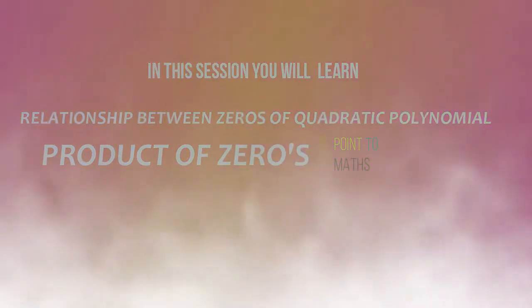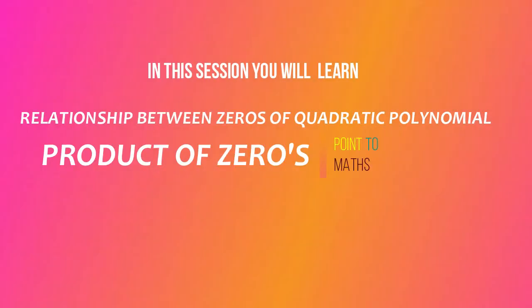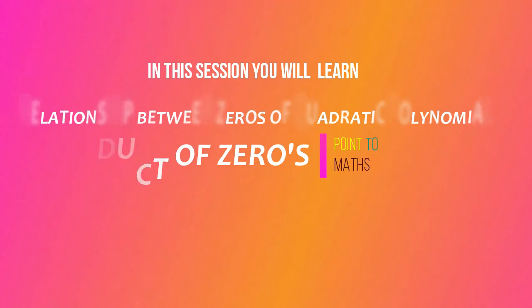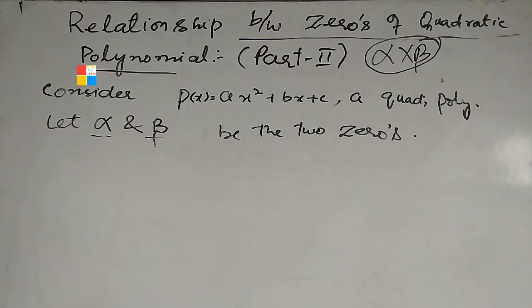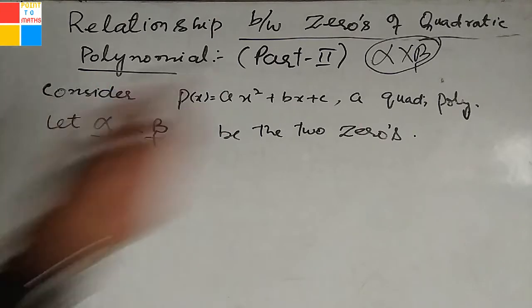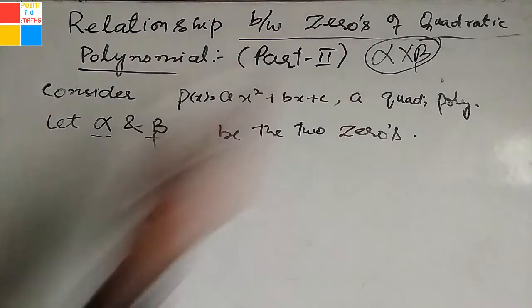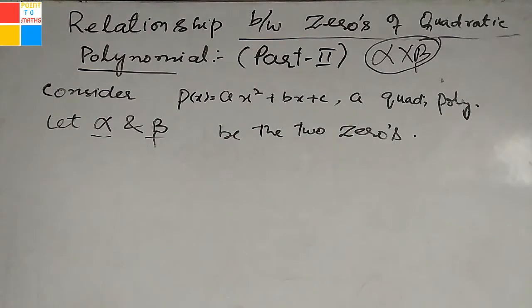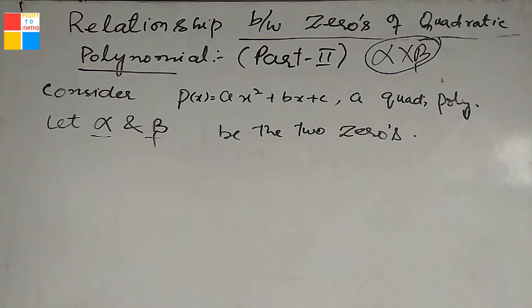Dear friends, welcome back to our next topic which is relationship between zeros of quadratic polynomial, part two. In this video we will find out the product of two zeros, that is alpha into beta. In the last video we found the sum of two zeros; in this part we will find the product of two zeros.